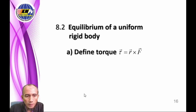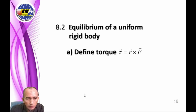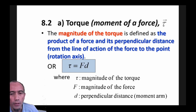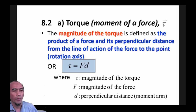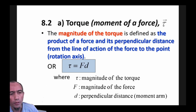Next topic is equilibrium of a uniform rigid body. When a rigid body is acted on by a system of forces, a change may be produced in the linear velocity or angular velocity of the body. Under certain conditions the body will be in equilibrium. Torque equals R times F. The magnitude of torque is defined as the product of the force and its perpendicular distance from the line of action of the force to the rotation axis. Torque tau equals F times d.